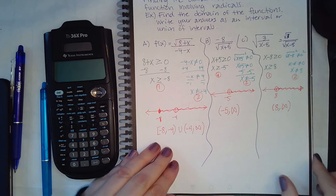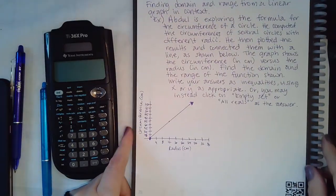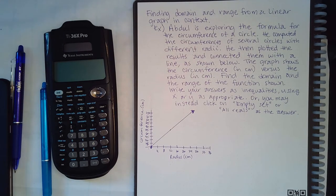One last topic and we are done with Module 23. So this problem says finding domain and range from a linear graph in context. So the example here is dual is exploring the formula for the circumference of a circle. He computed the circumferences of several circles with different radii. Radii is the plural version of the word radius. He then plotted the results and connected them with a line as shown below. The graph shows circumference in centimeters versus the radius in centimeters. Find the domain and the range of the function shown. Write your answers as inequalities using x or y as appropriate, or you may instead click on empty set or all reals as the answer.